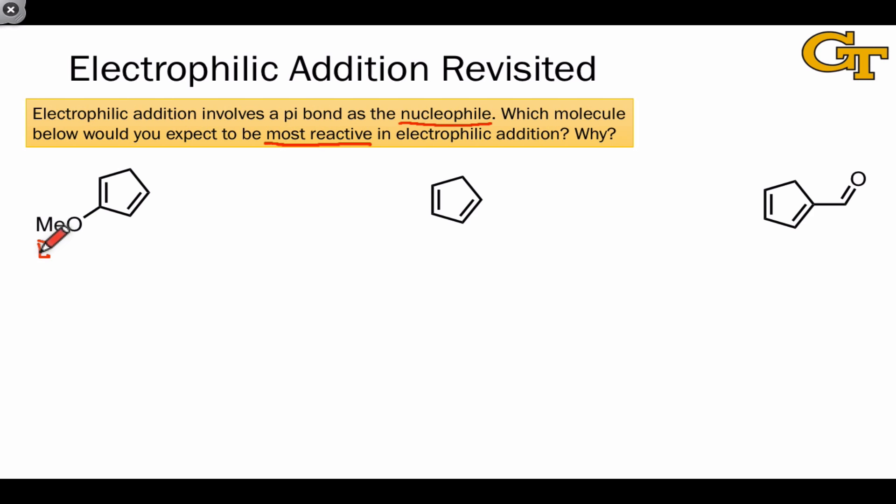Hopefully you recognize that the molecule on the left contains an electron donating group linked to the pi system, while the molecule on the right contains an electron withdrawing carbonyl group linked to the pi system.